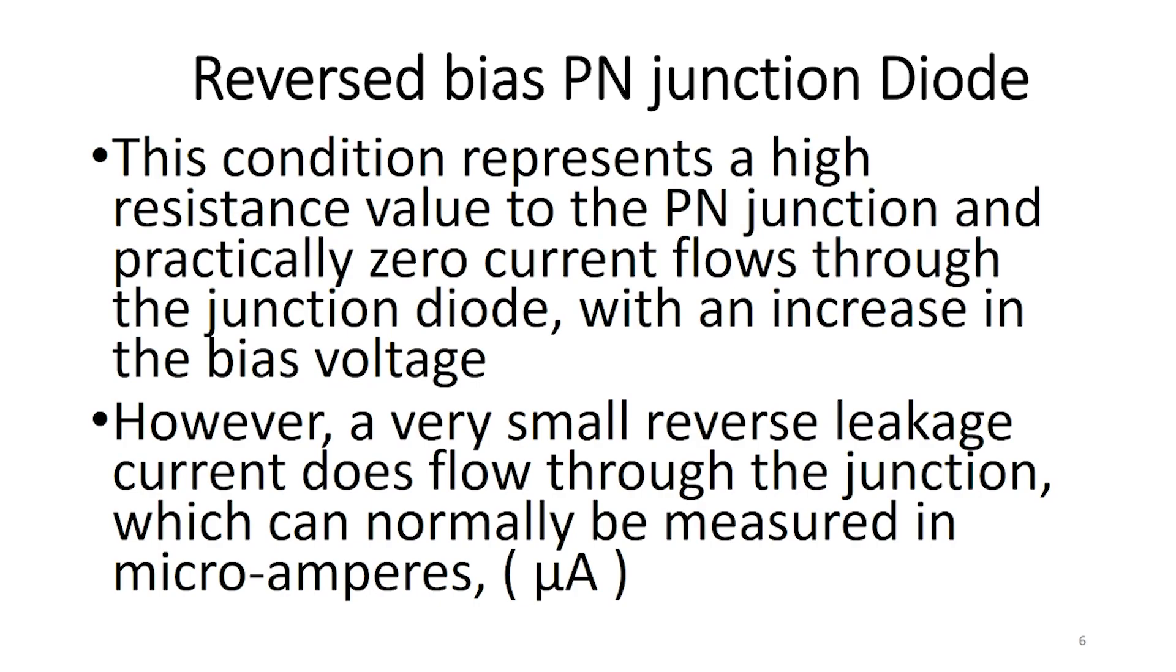This condition represents a high resistance value to the P-n junction, and practically zero current flows through the junction diode, with an increase in the bias voltage.